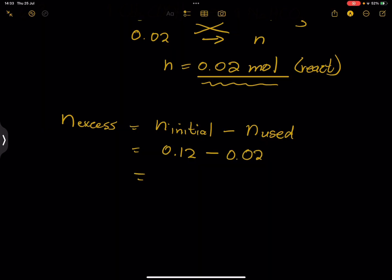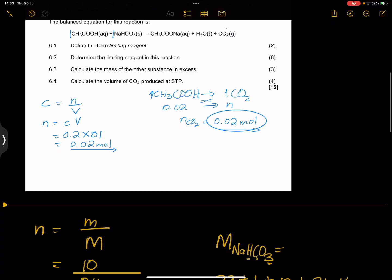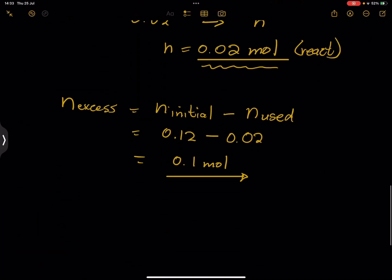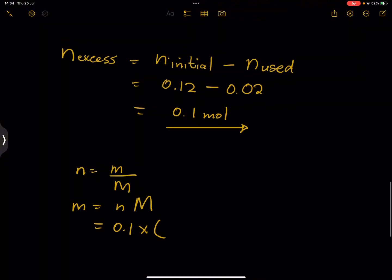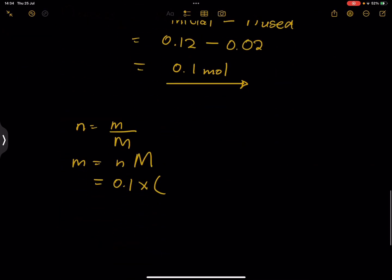The 0.10 moles of sodium hydrogen carbonate is the amount in excess. To find the mass, we use: mass = moles × molar mass = 0.1 × 84 = 8.4 grams. So 8.4 grams of sodium hydrogen carbonate will remain unreacted and is in excess.